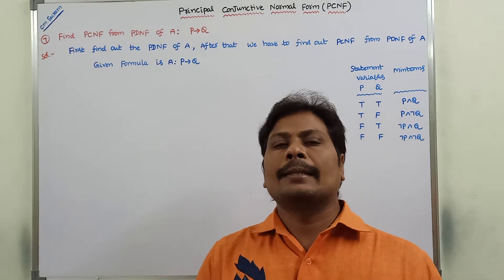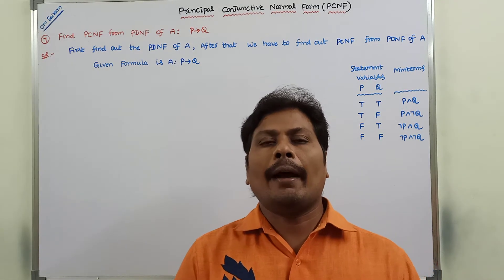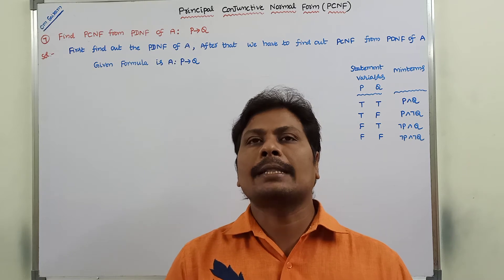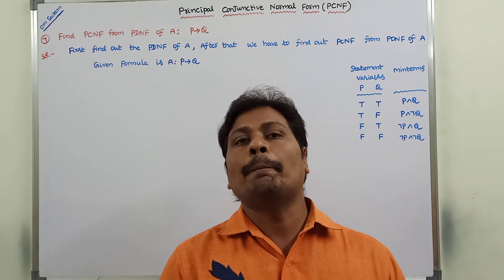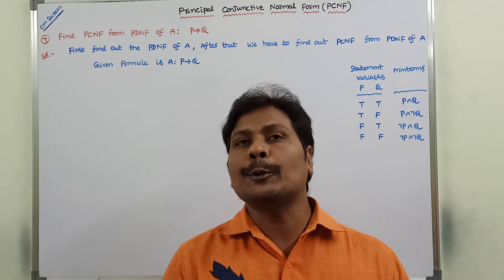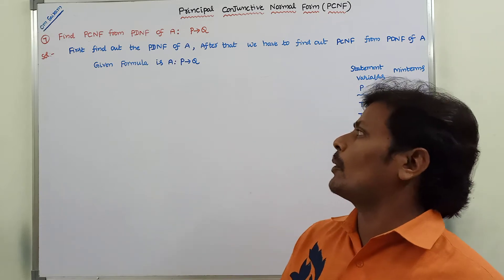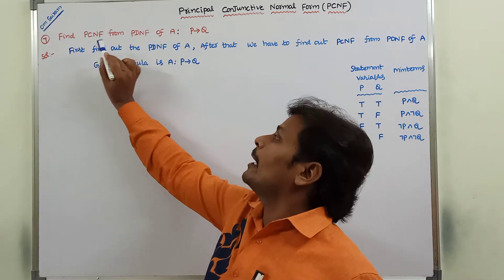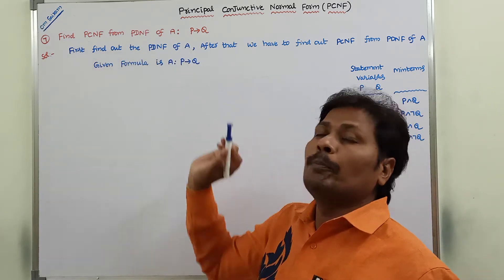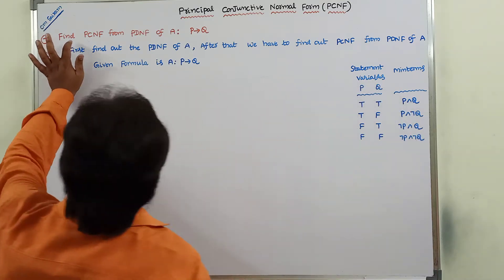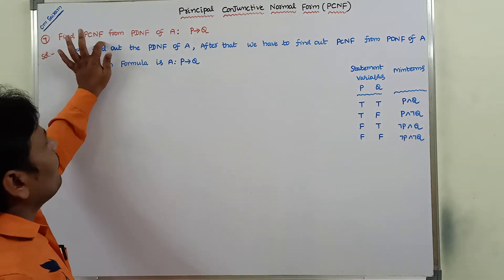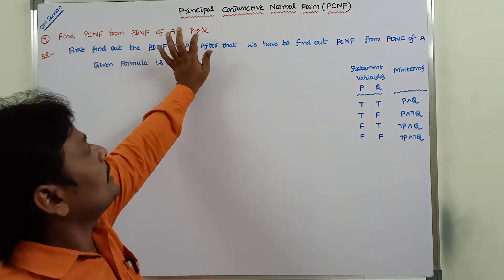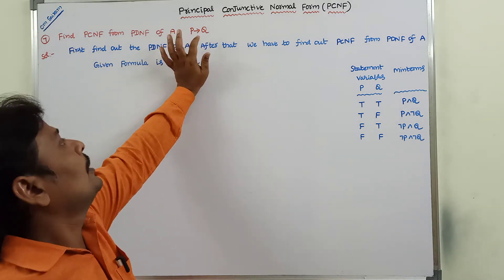Hi friends, today I am giving a lecture on an example problem on PDNF to PCNF. The given problem is: find PCNF from PDNF of A, where A is P conditional Q.